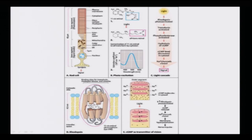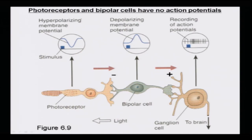This is the light cascade: the basic overall structure of the rod cells followed by photo excitation where eleven-cis retinal is transformed into eleven-trans retinal, leading to the bleaching process, then the rearrangement within the rhodopsin moiety with cyclic GMP as the transmitter of vision. Another cartoon shows that photoreceptors and bipolar cells have no action potentials — it is only the current which is generated. Hyperpolarizing membrane potential generates that current, which moves on to depolarize the bipolar cells, followed by the ganglion cell where action potentials are being generated.